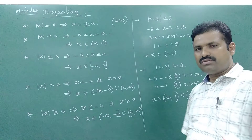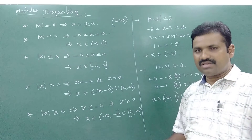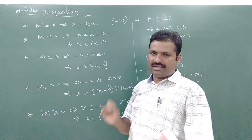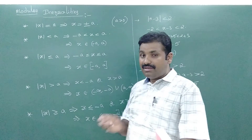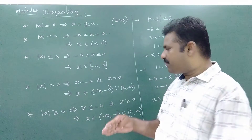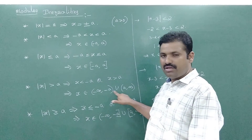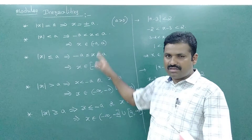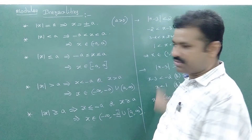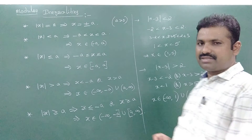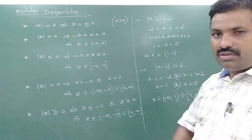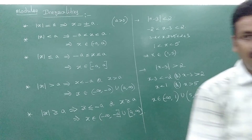So these are the basic types of problems based on modulus inequalities. Whenever mod x less than a, x lies between minus a and a. Whenever mod x greater than a, x is outside, i.e., before minus a and after a — that is minus infinity to minus a union a to infinity. Based on these properties only we solve these problems. Try to understand the concept and go through these types of problems one by one, and you will be thorough with them. Thank you very much.